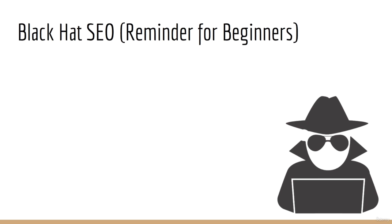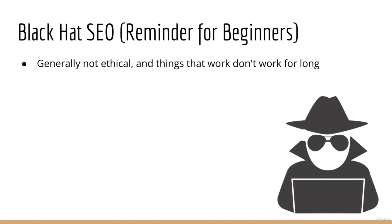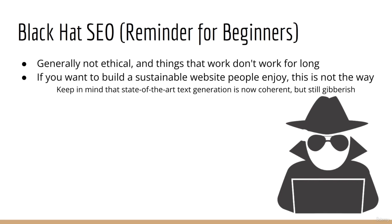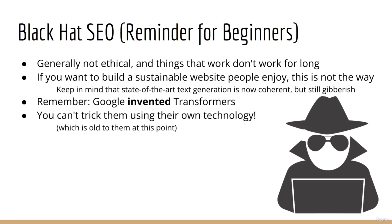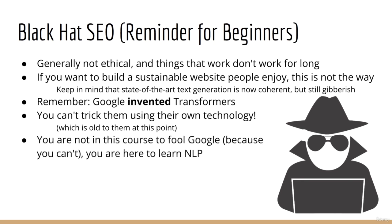As a final note on this topic, please be aware that article spinning is a black hat SEO technique. Generally speaking, these techniques are not ethical, and more practically, they never work for very long. Thus, if your goal is to actually build a good and sustainable website that people enjoy, this is likely not the way. Furthermore, you also have to remember that Google invented transformers. So if you're going to try and use transformers to fool Google, realize that they are way ahead of you. There is simply no way you can trick them using their own technology. You are in this course because you want to learn NLP.